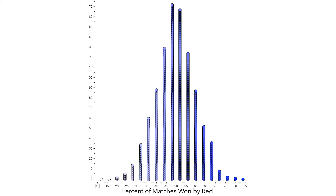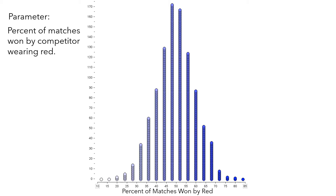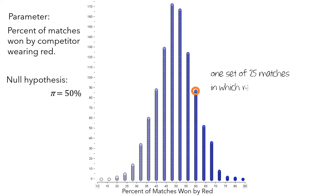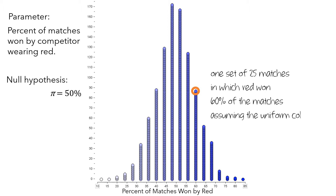Let's remember that the parameter is the percent of matches won by the competitor wearing red, and the null hypothesis is that that percentage is 50% — that is, red has no advantage. Let's think about what each dot means. For example, this dot represents one set of 25 matches in which red won 60% of the matches, assuming the uniform color has no effect.